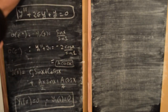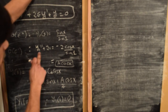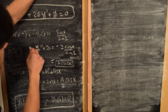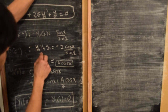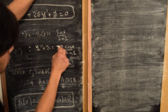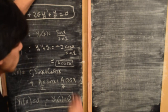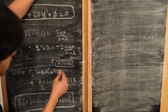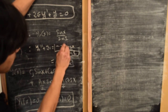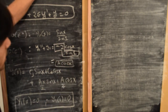We were in the process of solving for the first-order solution y_1, where it satisfies the differential equation y_1'' + y_1 = −2cos(x)/sin(1). If we call this constant factor A, we can write the right-hand side as A·cos(x).